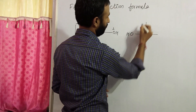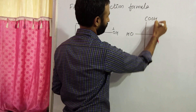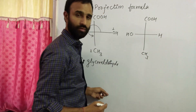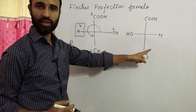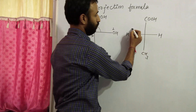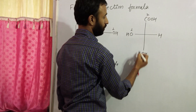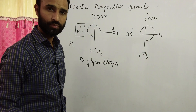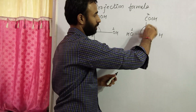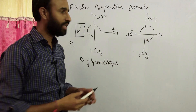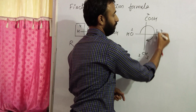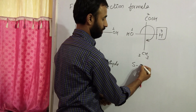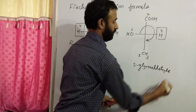Now, its mirror image is like this. So 1, 2, 3 — clockwise and the fourth group is horizontal. So it is S-glyceraldehyde.